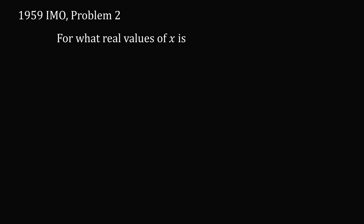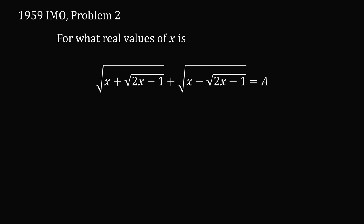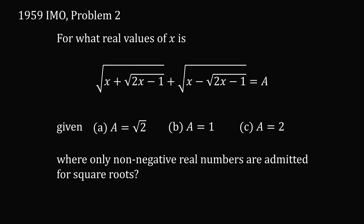This question comes from the 1959 IMO and is problem number two. For what real values of x is the square root of the quantity x plus the square root of the quantity 2x minus 1, plus the square root of the quantity x minus the square root of the quantity 2x minus 1, all equal to a? Given different conditions: part a, a is equal to square root of 2; b, a is equal to 1; c, a is equal to 2. Where only non-negative real numbers are admitted for square roots.